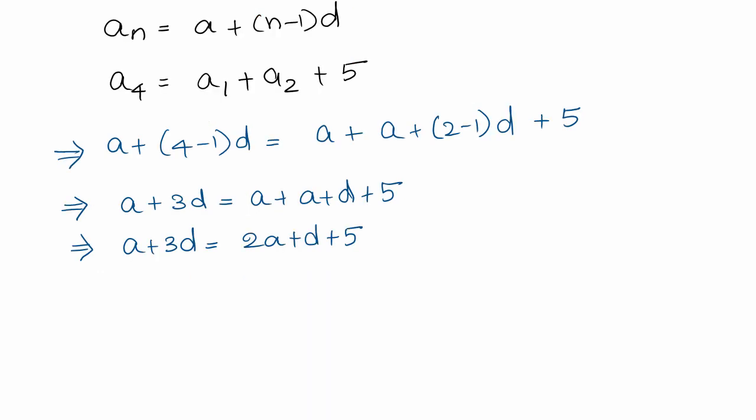Now, let us use the second part. a4 which is the fourth term is first term plus second term plus 5. In arithmetic progression, nth term, a of n equals a plus n minus 1 times d. This equation you should remember. It is basic. Once you know this, you can substitute.